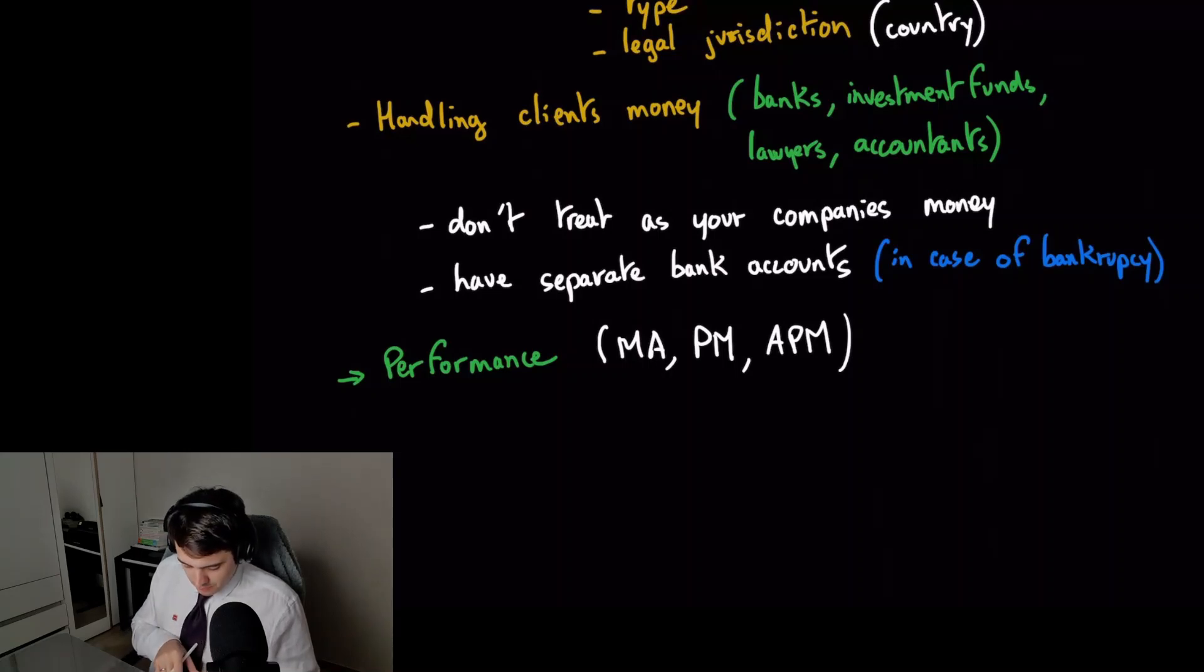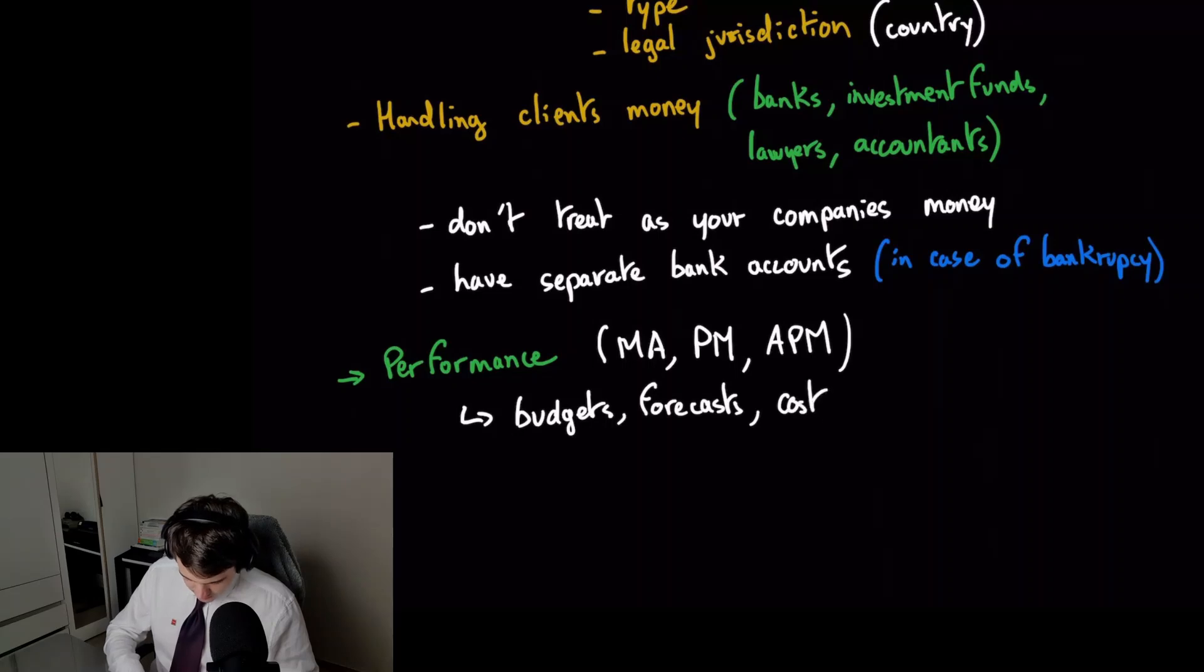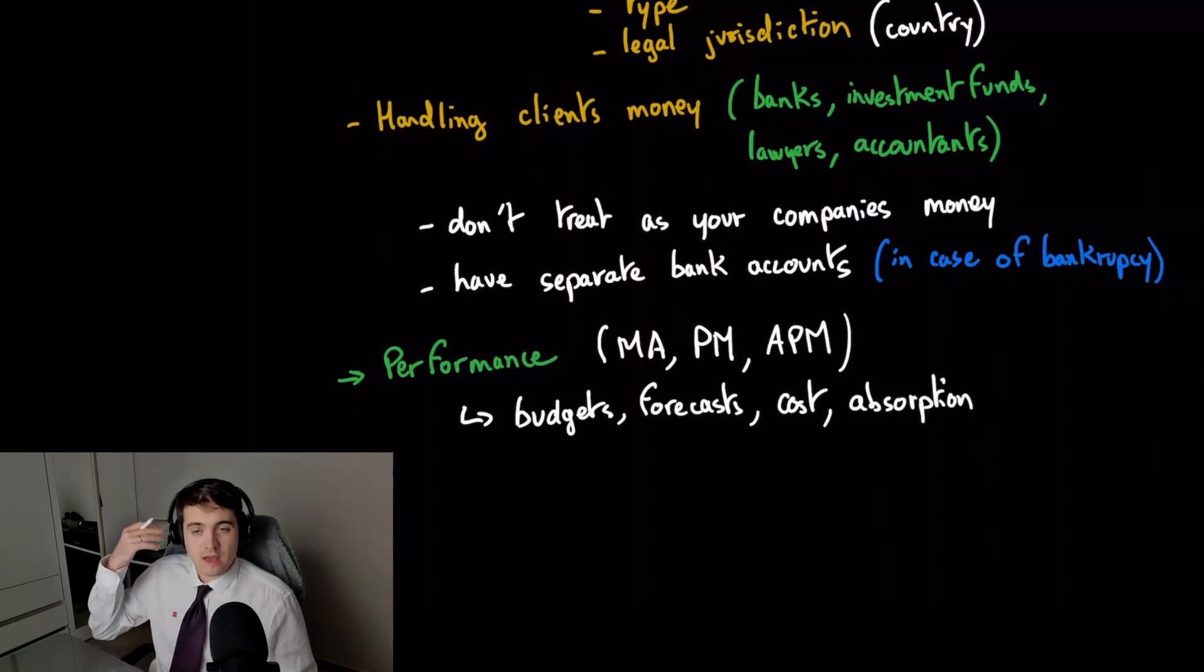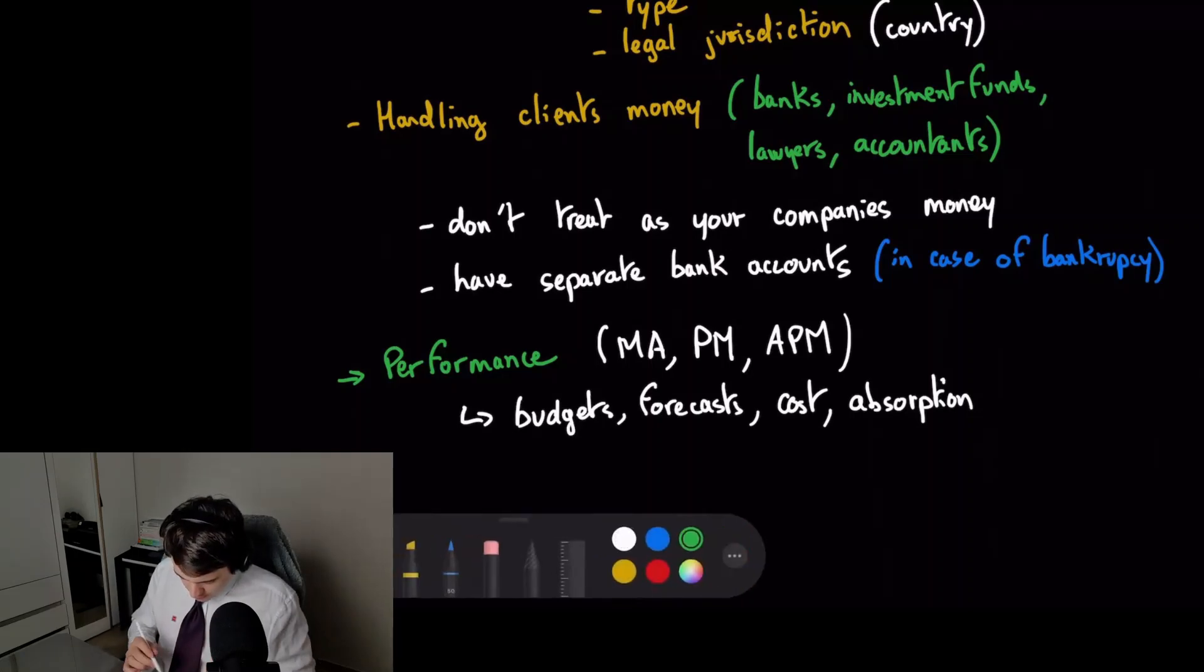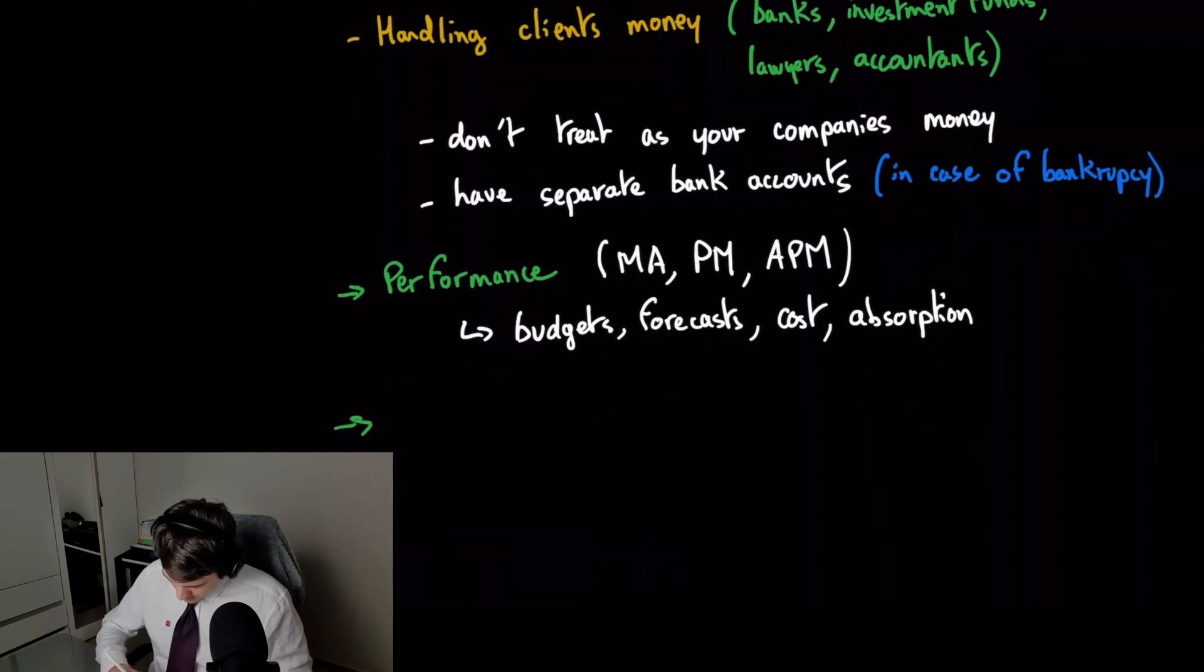So MA, management accounting, and performance management, and then advanced performance management. This is all about budgets, forecasts, cost accounting, absorption costing, all of these areas where you're basically trying to save money, improve cost, and improve the business.